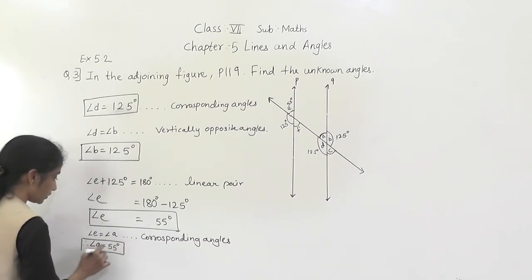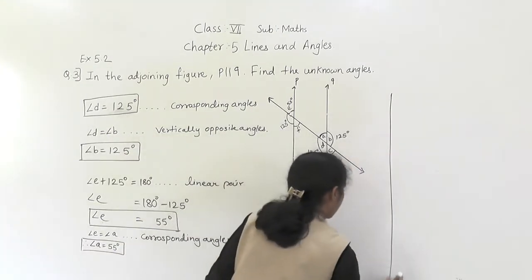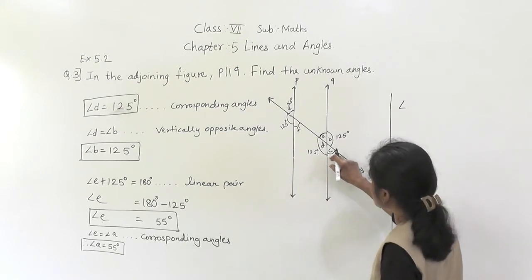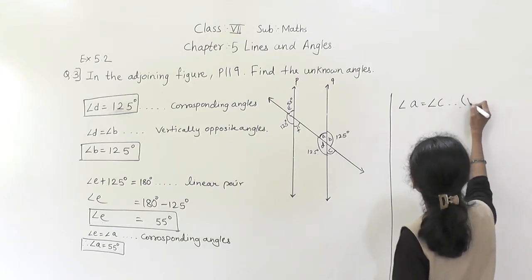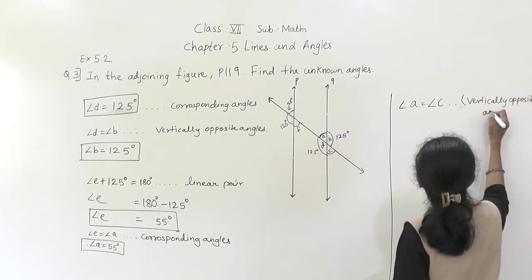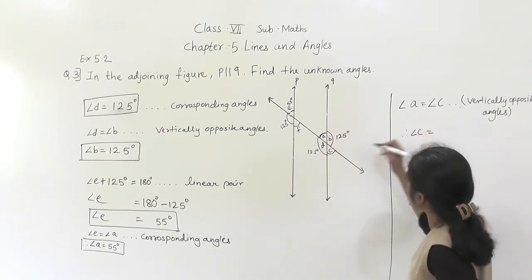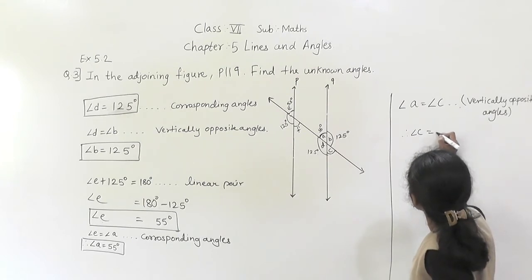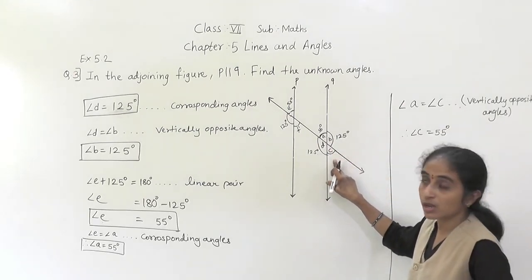Next, angle C. Angle C is the vertically opposite angle to angle A. Angle A and angle C are vertically opposite angles. So angle A equals angle C. Angle C is equal to angle A, which is 55 degrees. Because angle A and angle C are vertically opposite angles.